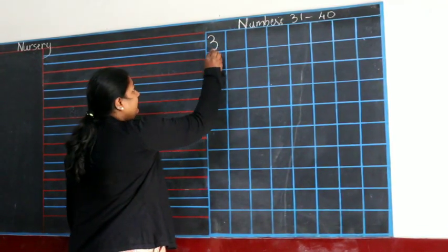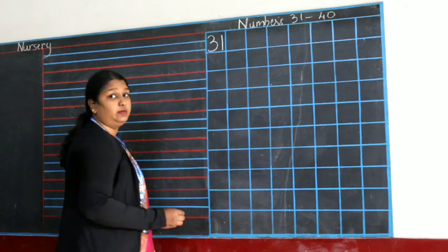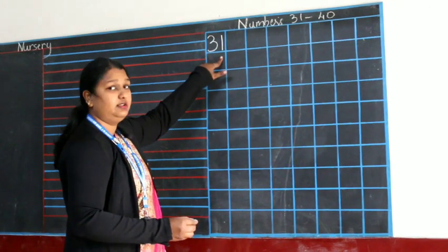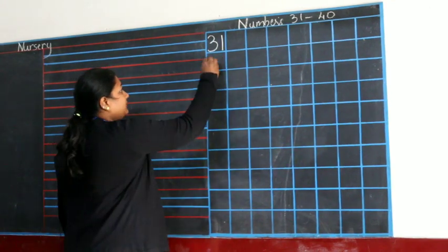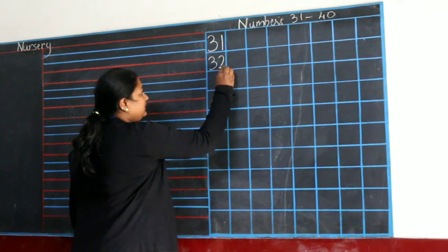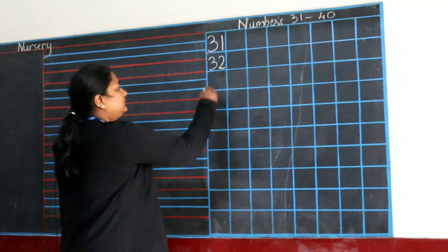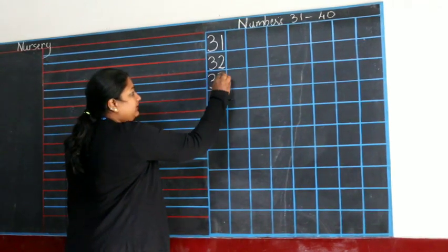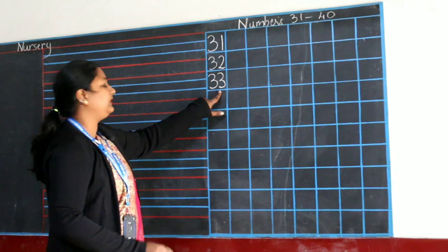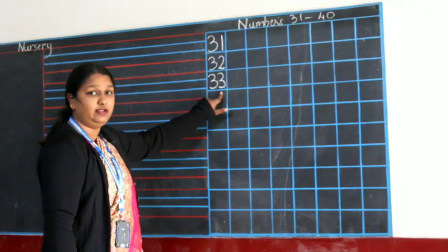3, 1, 31. 3, 1, 31. 3, 2, 32. 3, 3, 33. 3, 3, 33.